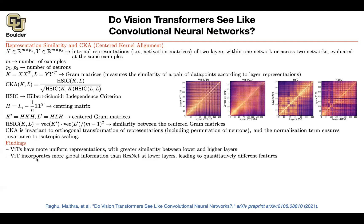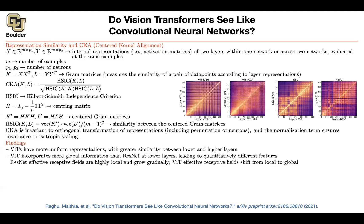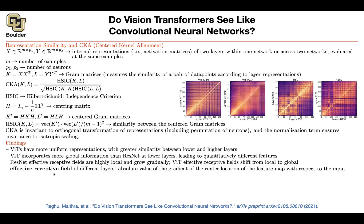Vision transformers are based on attention, and it makes sense — they incorporate more global information about your image. This pixel is going to pay attention to the last pixel by construction; it is more global. CNNs are more local: they look at a window of your image and focus on that. To formalize this mathematically, you can look at the concept called effective receptive field.